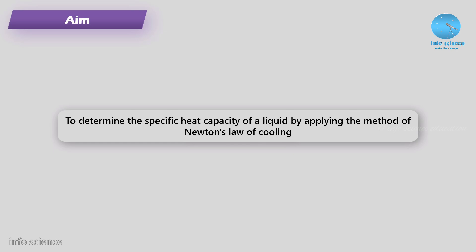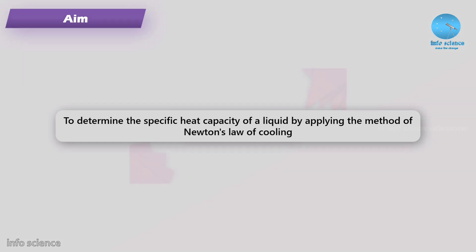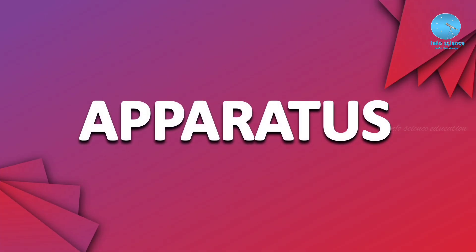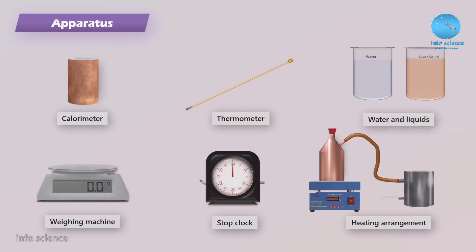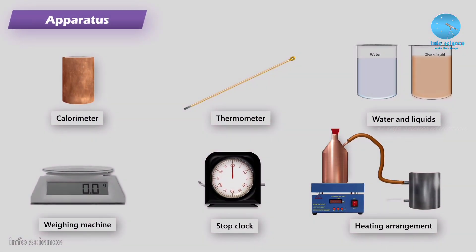Now we are moving to the apparatus required for this experiment. The apparatus includes a calorimeter, thermometer, water and the given liquid, weighing machine, stop clock, and heating arrangement.